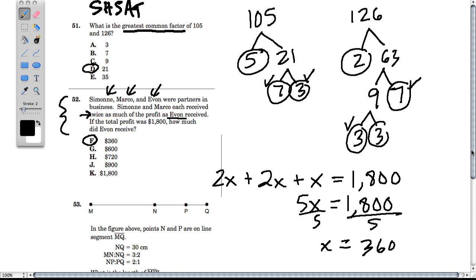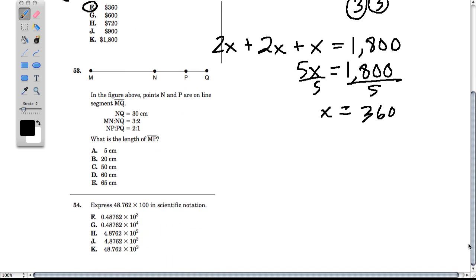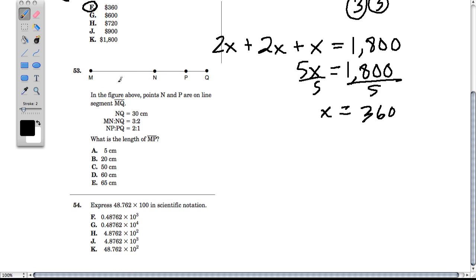Now we have, I think, a typical question. We're dealing with points on a line. And we'll give you some sort of relationship between different line segments. And then we have to figure out some mystery line segment. Anyway, here we have NQ equals 30. So NQ equals 30 centimeters. And that's from here to here.